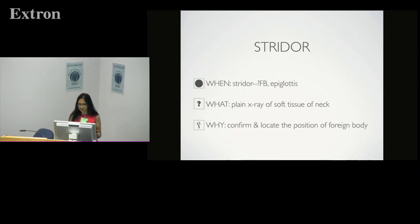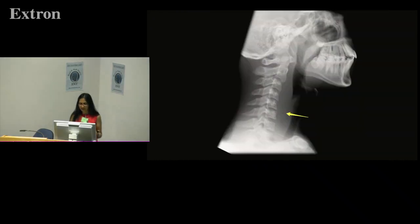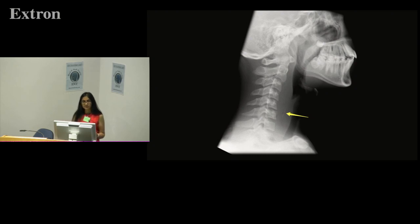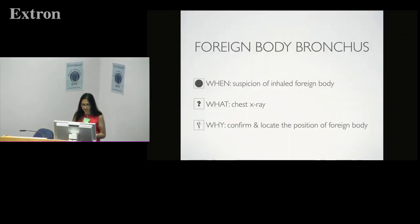When a patient presents with stridor and there's a suspicion of a foreign body, you would do a plain x-ray of the neck to confirm and locate the foreign body. Here is a foreign body with widening of the prevertebral soft tissues. However, remember that plain x-ray is only 40% sensitive, so CT becomes a much more sensitive test for the location and detection of foreign bodies.